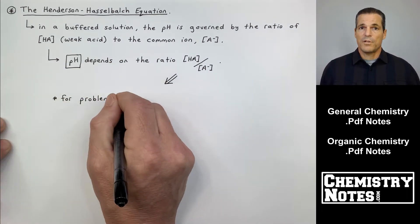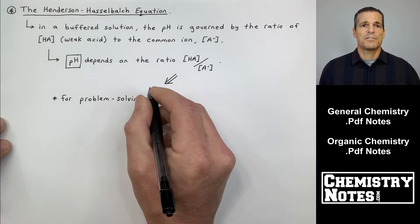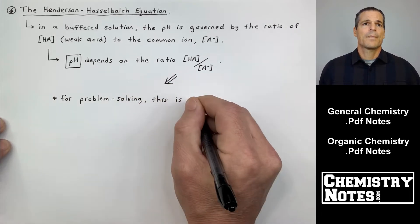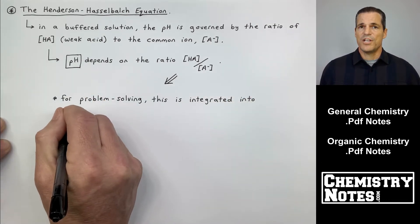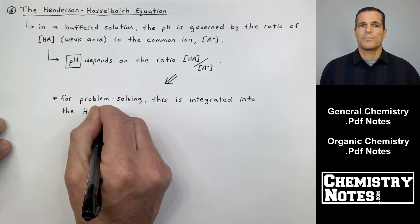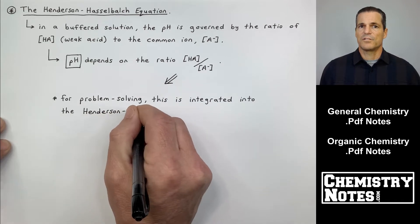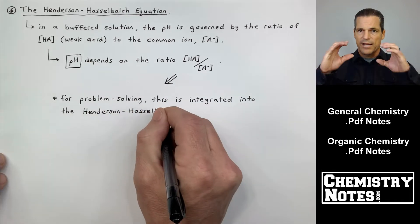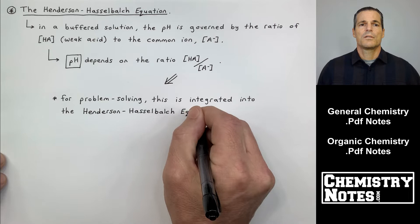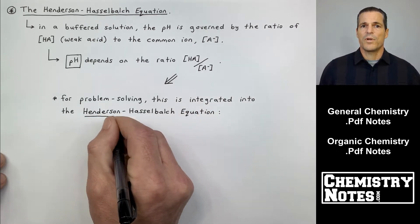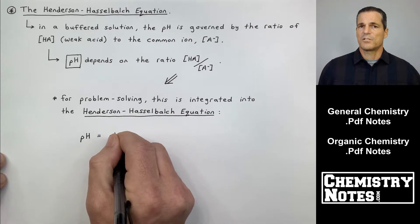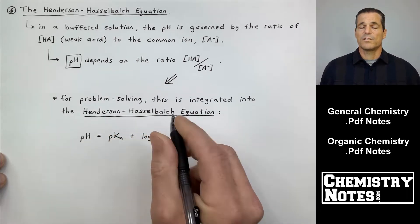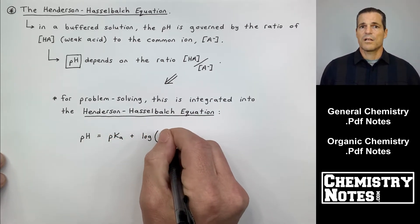So at the top of our notes here, page one, it says the Henderson Hasselbalch equation. In a buffered solution, the pH is governed by the ratio of HA concentration, a weak acid, to the common ion's concentration, A minus. So essentially the pH depends on the ratio of the concentration of HA to the concentration of A minus or vice versa.